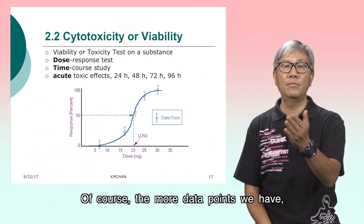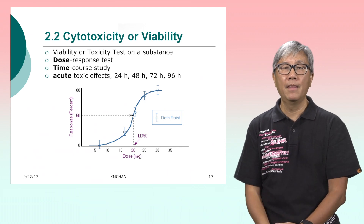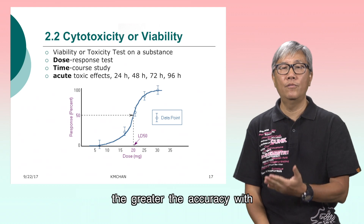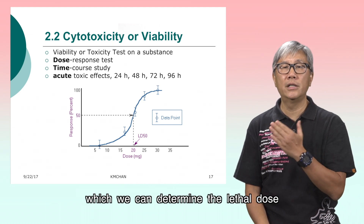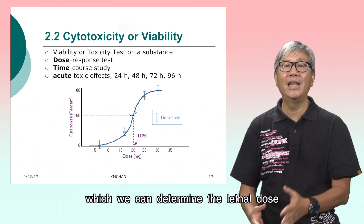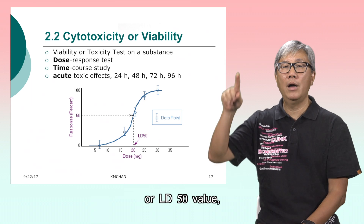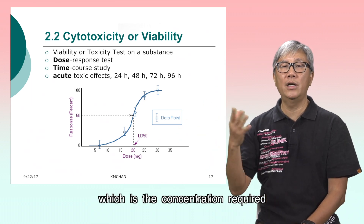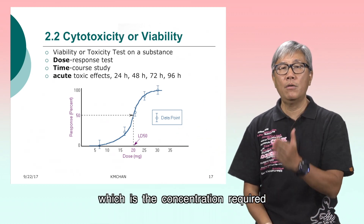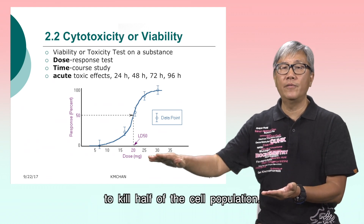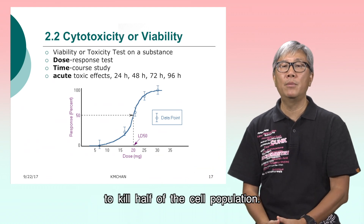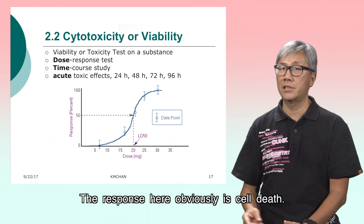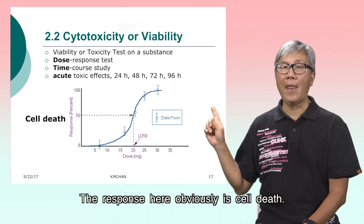Of course, the more data points we have, the greater the accuracy with which we can determine the lethal dose or LD50 values, which is the concentration required to kill half of the cell population. The response, obviously, is cell death.